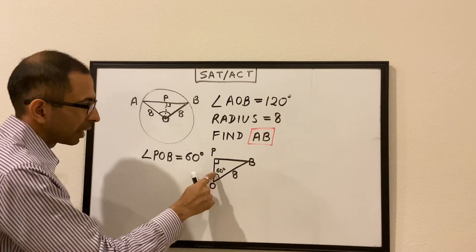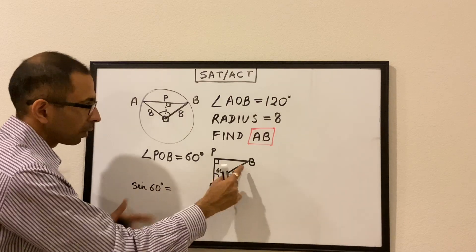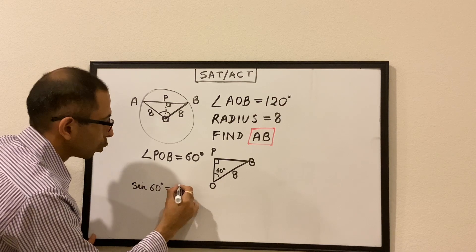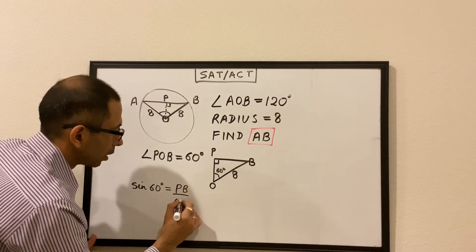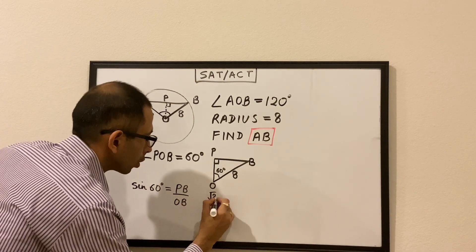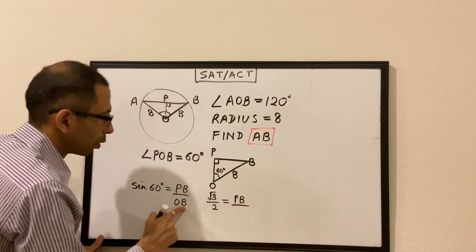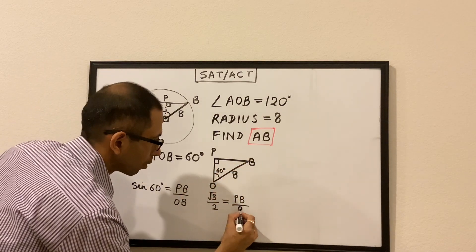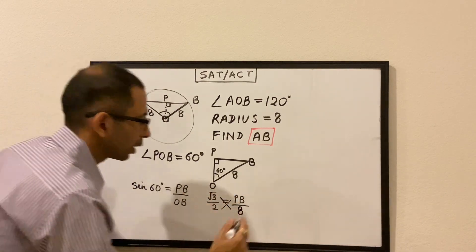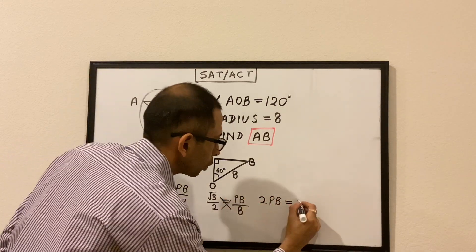We use sine of 60 degrees to find PB, since sine of an angle is opposite over hypotenuse. So sine 60° equals PB over OB. Sine of 60 degrees is root 3 over 2, so root 3 over 2 equals PB over OB, and OB is 8. Cross multiplying gives us 2·PB equals 8 root 3.